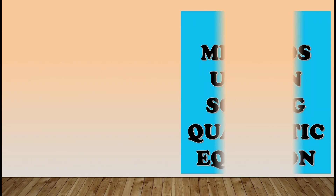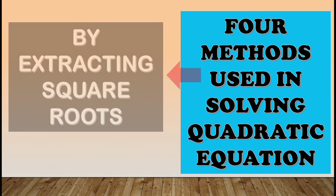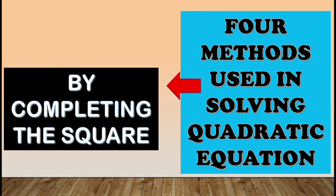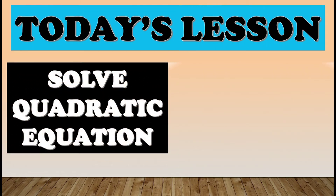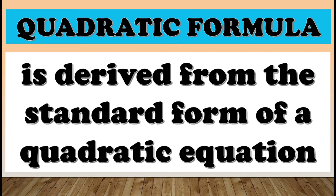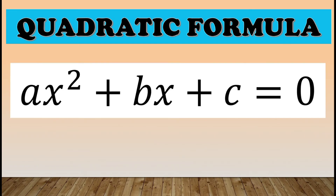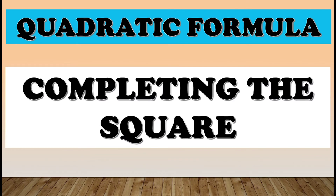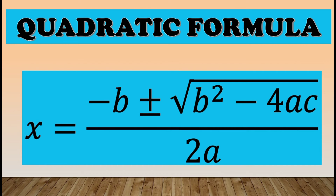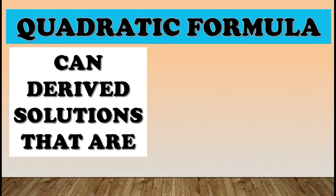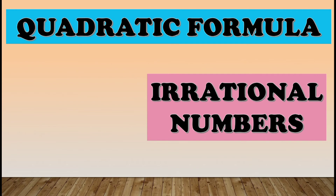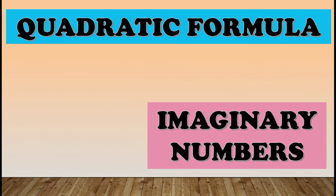In our previous video, we named four methods used in solving quadratic equations. These are by extracting square roots, by factoring, by completing the square, and by using a quadratic formula. But for today's lesson, we will solve quadratic equations by using a quadratic formula. Quadratic formula is derived from the standard form of a quadratic equation, ax² + bx + c = 0, by completing the square. It is: x = (-b ± √(b² - 4ac)) / 2a. It helps us obtain solutions that are rational numbers, irrational numbers, or even imaginary numbers. Generally, all quadratic equations can be solved using a quadratic formula.